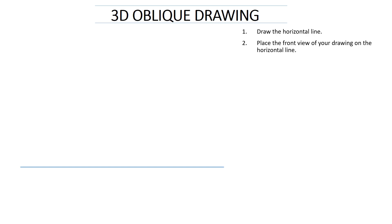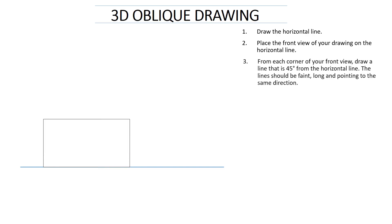So we've got to draw the front view of this block. There it is — it looks exactly like this. Now let's go to the third step: from each corner of your front view, draw the line that is 45 degrees from the horizontal line. The lines should be long and pointing to the same direction. Now let's draw those lines starting from the bottom right corner. There is our line. Remember the angle — it must be at an angle of 45 degrees from the horizontal.